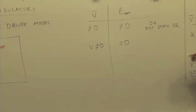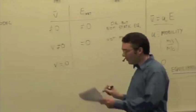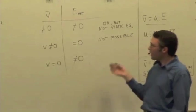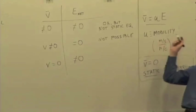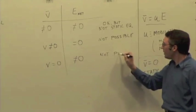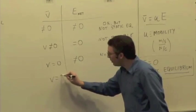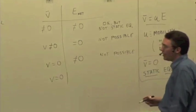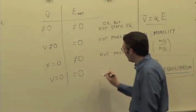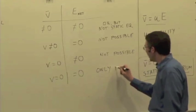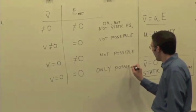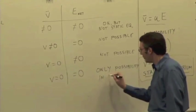V equal to zero and electric field not equal to zero. Is that possible? Nope. There's only one possibility left when we're in static equilibrium. That is, if we're in static equilibrium, if the drift speed of these mobile electrons is equal to zero, the net electric field has to be equal to zero. So this is the only possibility in static equilibrium.